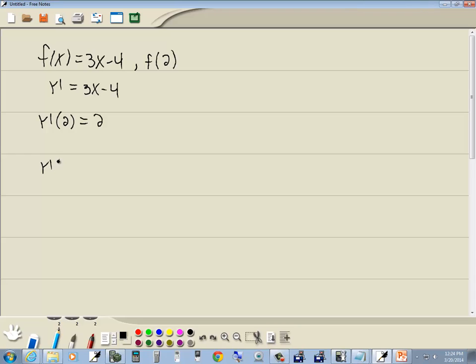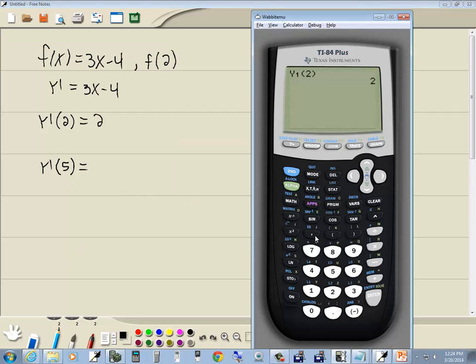Now, if I wanted to evaluate that for a different value, let's say I wanted to put 5 in there. Well, then we go back in, go to vars, go to y vars, go to function, do enter on y1, and then I do a beginning parentheses, 5, closing parentheses, and enter. And that would give us 11.